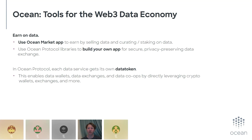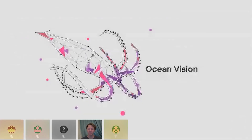Within Ocean, you'll hear the word 'data token' a lot, because every single data service and data set gets its own data token. This helps unlock things like crypto wallets as data wallets, DEXes as data exchanges, data co-ops, and so on. Bruce has already given an overview of the Ocean vision, but I'll summarize another way of seeing this.